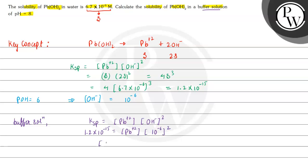From this we find that the concentration of Pb²⁺ equals 1.2 × 10⁻³ molar. From the dissociation equation, the solubility of Pb(OH)₂ equals the solubility of Pb²⁺, which comes out as 1.2 × 10⁻³ molar. This is the final answer.